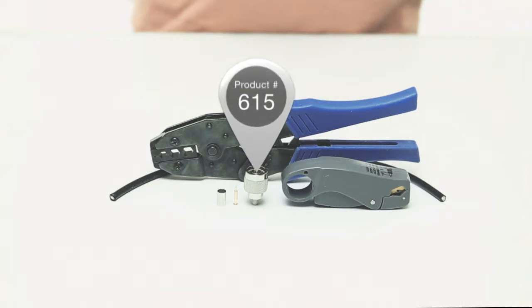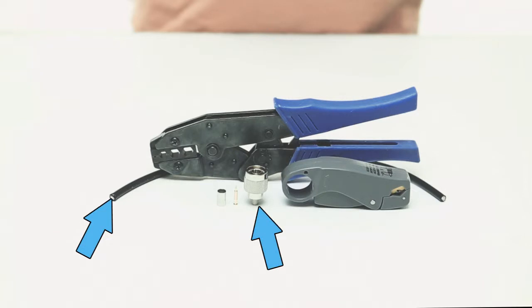For today's project, I'm going to need LMR240 low loss coax cable, a three-piece N-male crimp connector, a coax strip tool, and a crimp tool.